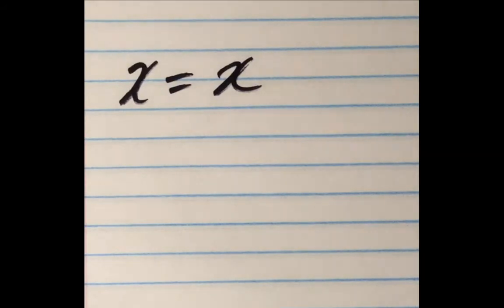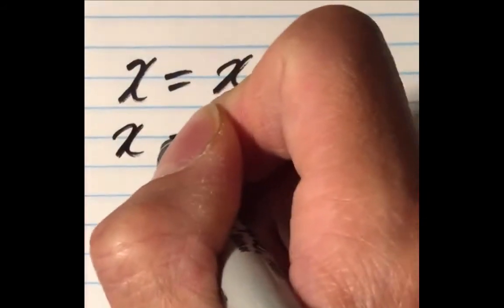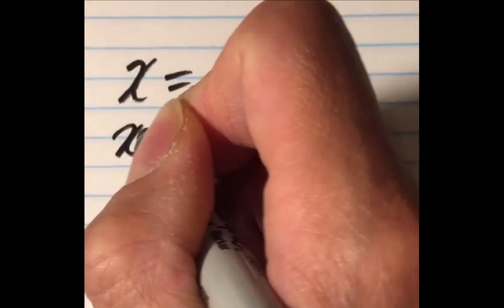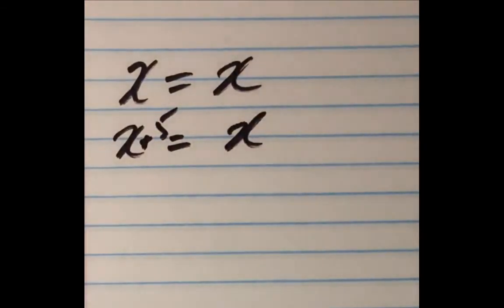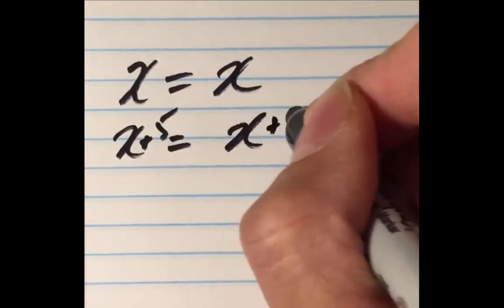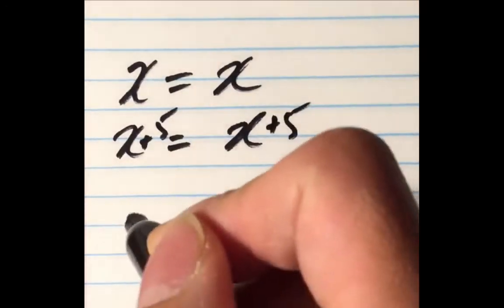To illustrate this, x equals x. If we go ahead and perform an operation to the right-hand side, such as add 5, we'll see that x plus 5 does not equal x. To keep the equal sign, we'll have to add 5.